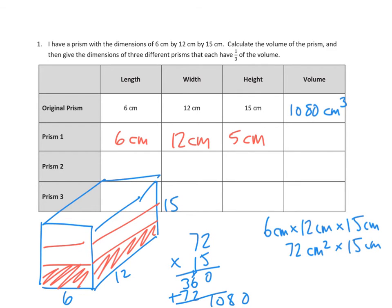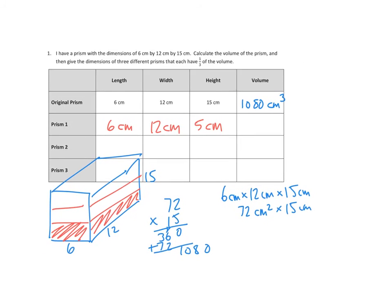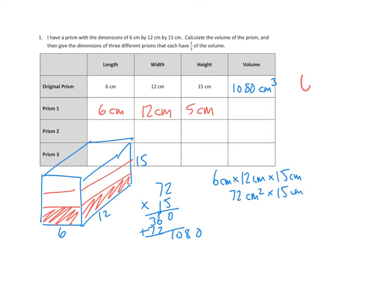And just to test that out, I'm going to give myself a little bit of extra working room. So 6 times 12 times 5. I'm going to multiply the 6 and the 5 together first. And that's 30 times 12. 30 times 12, that's 36 times 10, or 360 cubic centimeters.